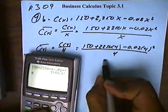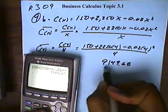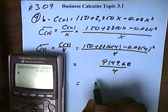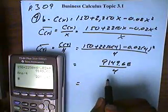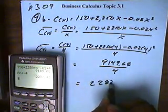That gives me a numerator of $9,149.68, all divided by 4. And when we divide that by 4, I end up getting $2,287.42.